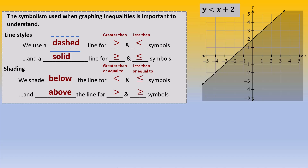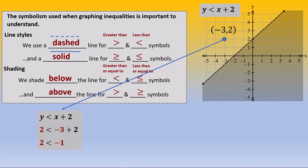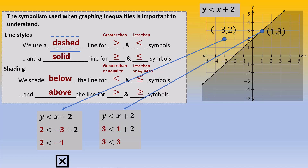Let's look at some possible points on this graph and determine if they are in the solution set. First, let's consider the point negative 3, 2. We plug it into our inequality, and we end up with 2 less than negative 1. This is not a correct statement; therefore, this point is not in the solution set, and you can see that it is outside of the shaded region. We pick another point, 1, 3, plug it in and work it through, and we get 3 less than 3. This is still not a correct statement — 3 is clearly not less than 3. And you can see that this point is on the dashed line, which means it is not in the solution set.